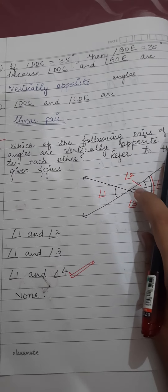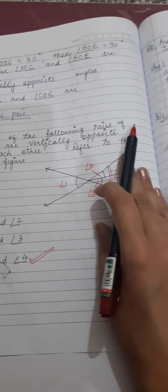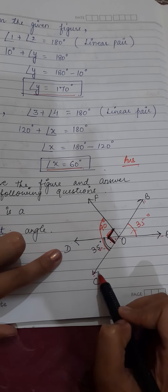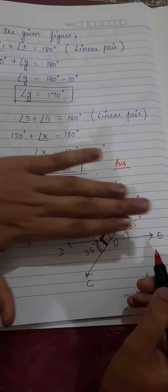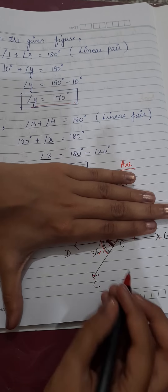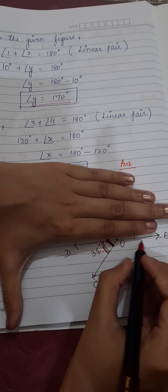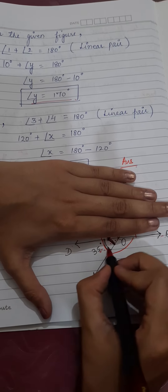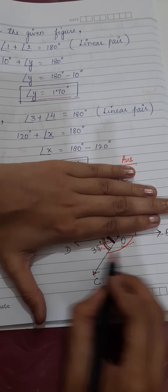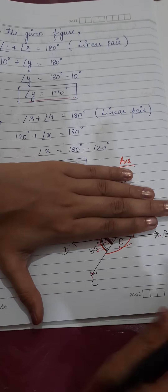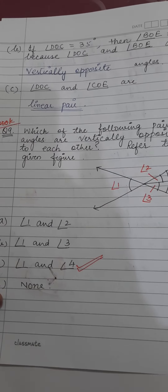For angle DOC and angle COE — on the straight line, this angle and this angle are on the same side, so they form a linear pair. Therefore part C is: angle DOC and angle COE are a linear pair.